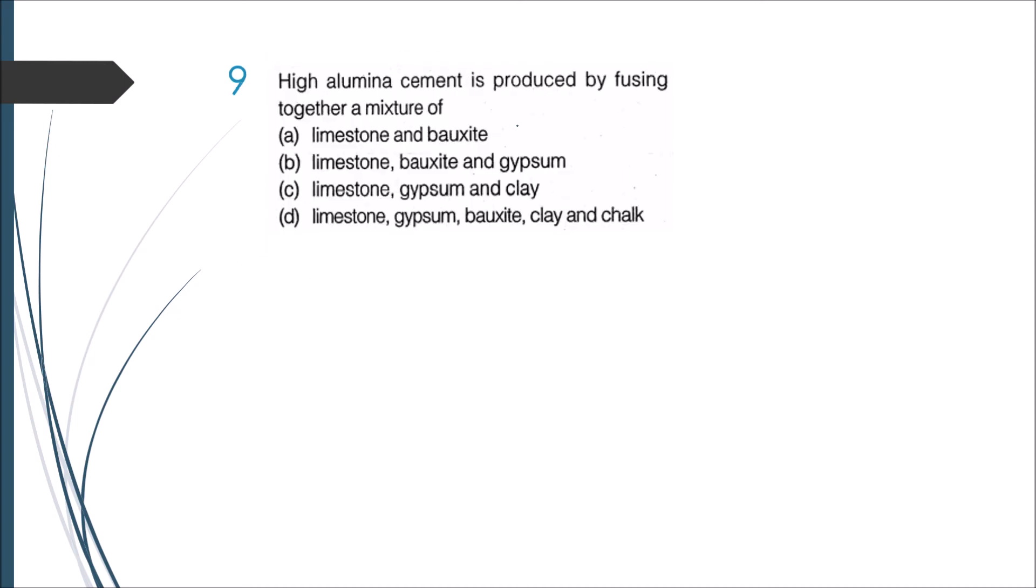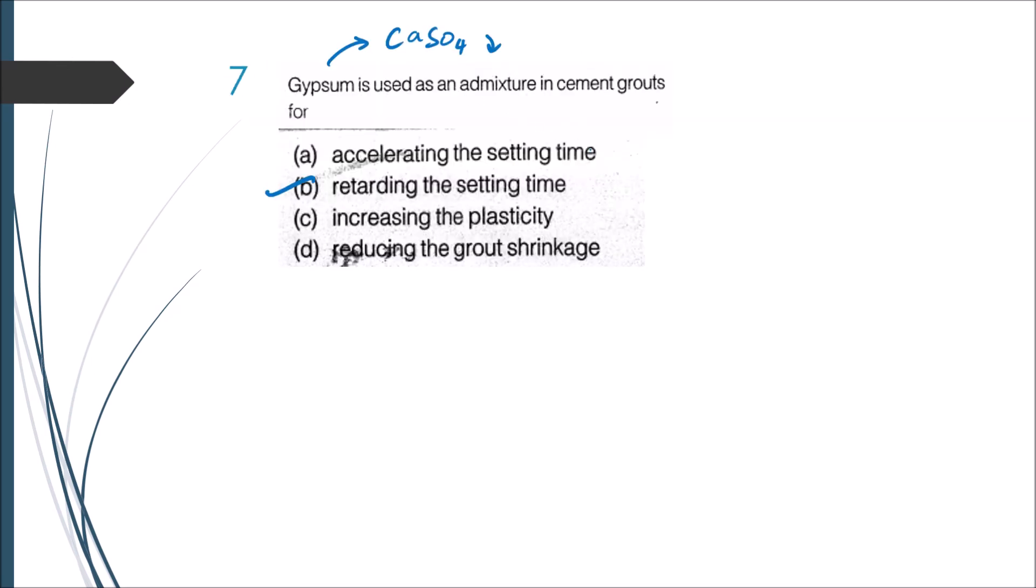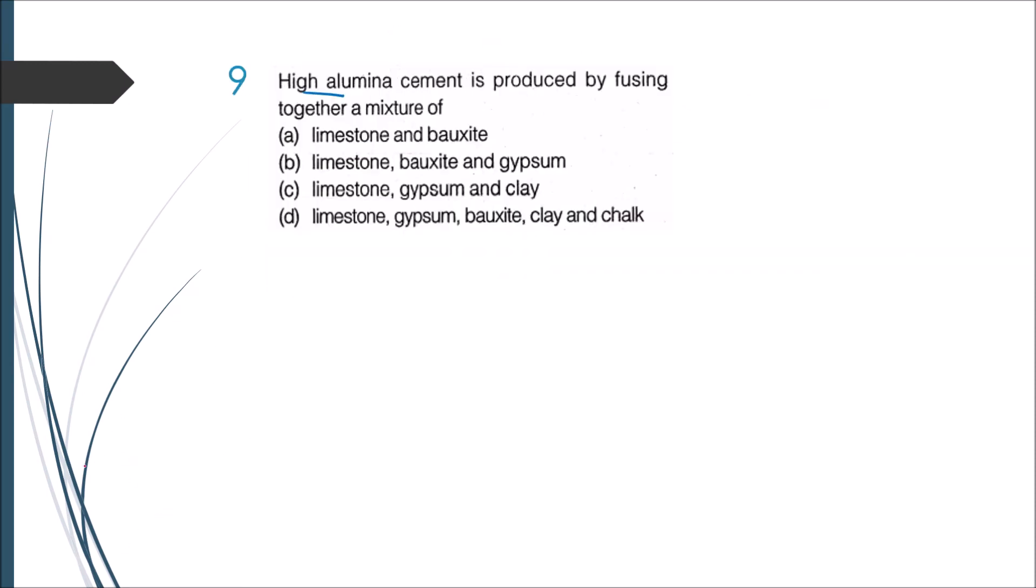Next: high alumina cement is produced by fusing together what? High alumina cement we just now saw in this problem - high alumina cement will be used with calcium chloride and what is calcium chloride? Calcium chloride is an accelerator and we don't need any retarders to be present. What is a retarder? Gypsum is a retarder. So we don't need any gypsum or retarders to be present in a high alumina cement.